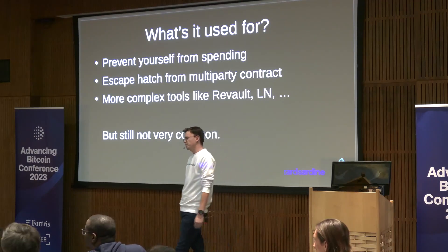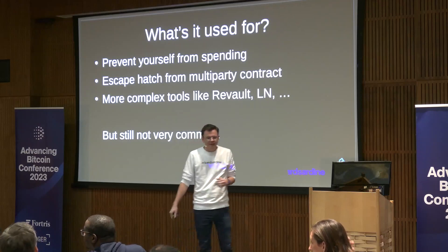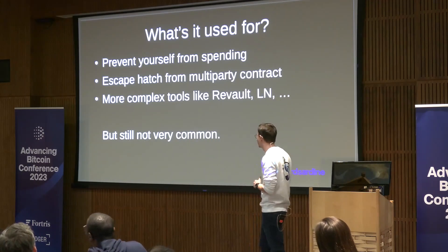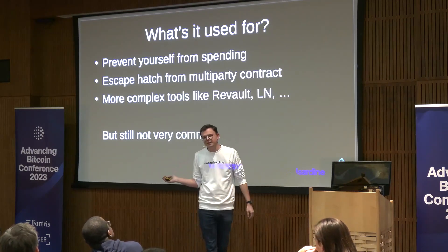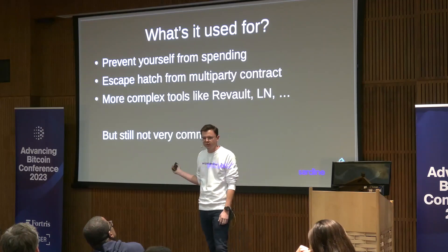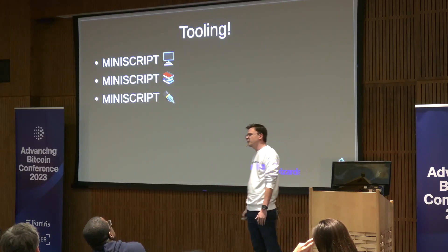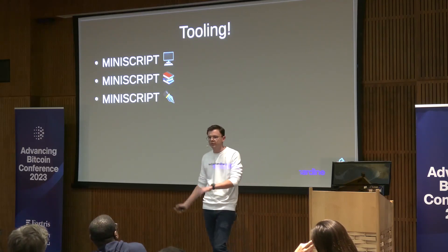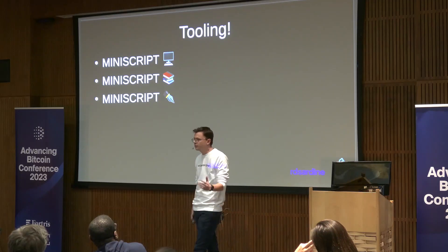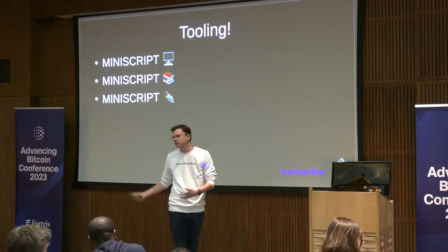Timelocks can also prevent someone holding a gun to you from forcing you to spend — though they might just hold the gun longer. One of the reasons timelocks weren't really used until now is tooling. We didn't really have good tooling. It's been 14 years that we've had timelocks in Bitcoin, but it was still very custom scripting. You shouldn't play with custom scripts in your own Bitcoin wallet — you're going to lose money, you won't have compatibility between wallets, hardware wallets don't handle it, and so on.